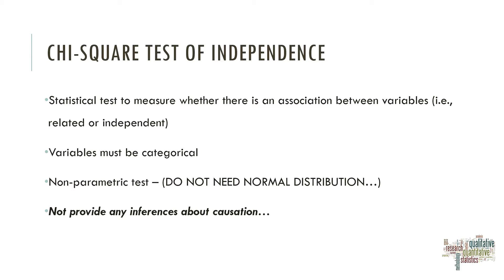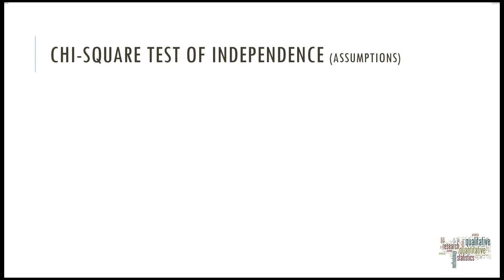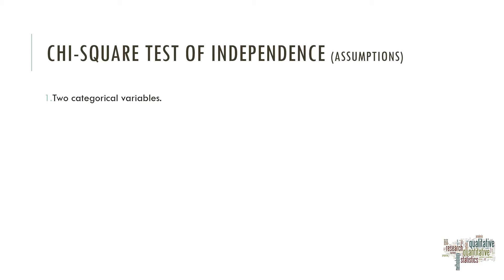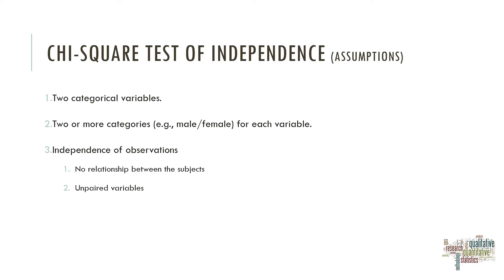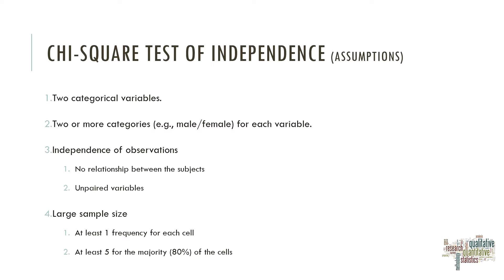There are some assumptions regarding the Chi-Square Test. The variables must be categorical. There will be needed two or more levels for each variable — for instance, if we have a gender variable, we may have two levels such as male or female. Variables must be independent observations, and there should be no relationship between subjects. We also expect a large sample size, with at least one frequency for each cell and at least five for the majority — 80% — of the cells.